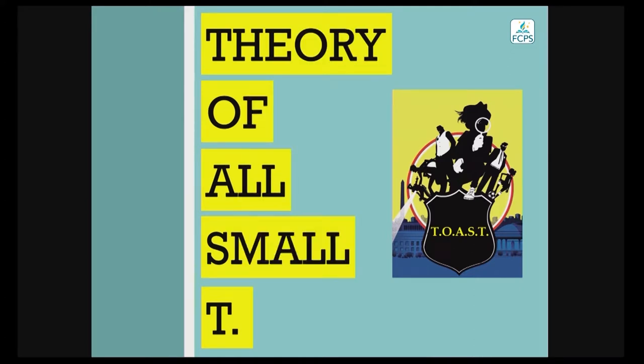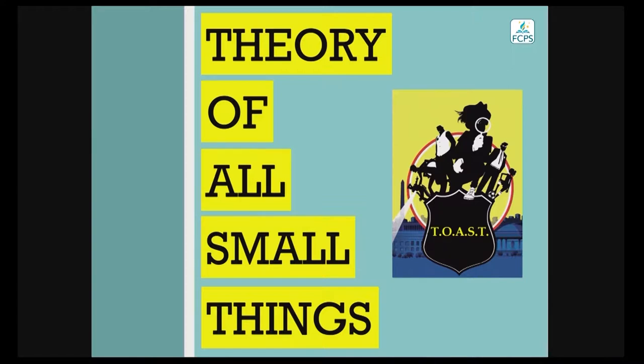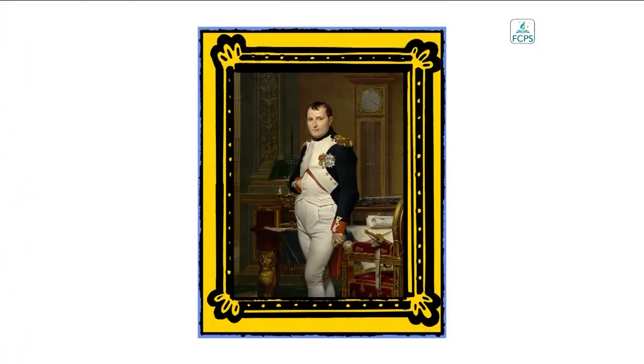TOAST stands for the Theory of All Small Things. Florian Bates, the main character, invented it as a survival skill because his family moves every couple of years and he's constantly in a new school. He's learned that people are often one way in big grand motions but deceitful in little ways, so he looks at small things to figure out who the bully is or where to get the best pizza. When he moves to Washington and meets Margaret, they realize TOAST can be used for all kinds of things — playing games with details and solving mysteries.